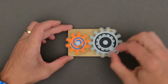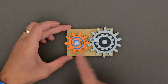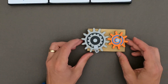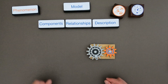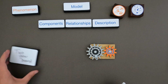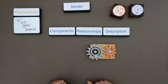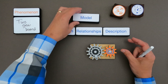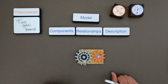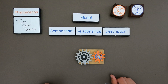The phenomena I'm going to try to explain is this two-gear board. We've got a gear on this side that I can turn with my hand, and then we've got other parts that are moving as I turn it. The first thing I want to do whenever I'm modeling is to define the phenomena. So the phenomena I'm trying to model is this two-gear board, and we're going to create a model of that. The first thing is to figure out what are the important components to model.